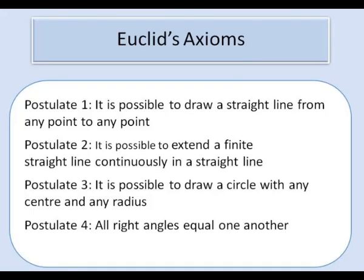So the first four axioms are postulate 1, it is possible to draw a straight line from any point to any point. Postulate 2, you can extend a straight line continuously in a straight line. You can draw a circle with any centre and any radius and all right angles equal one another. I hope you will grant that these are plausible if not self-evident statements and that these are sufficiently solid that we can build our geometry on them.